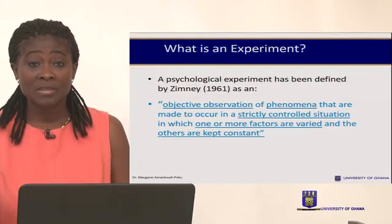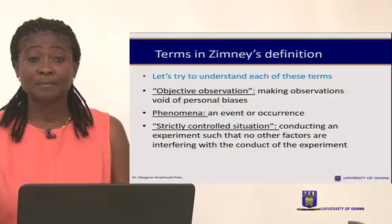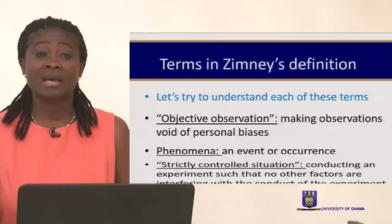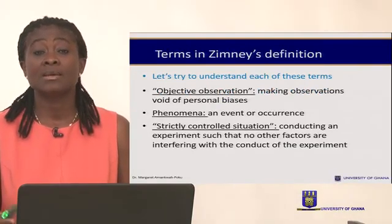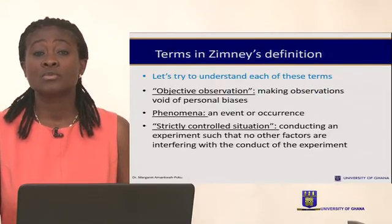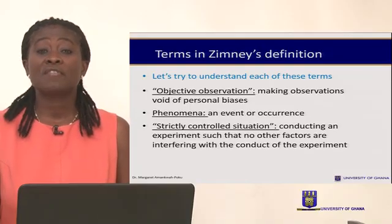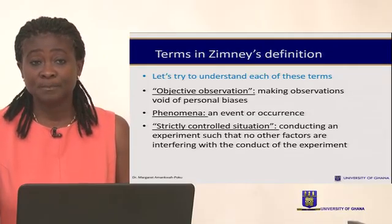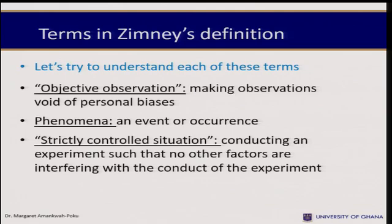Let's briefly look at what those phrases mean. When we talk about objective observation, we are talking about making observations that are void of personal biases — what have we observed in our environment, society, or community that we would want to investigate? A phenomenon refers to an occurrence or event that we may be interested in investigating.